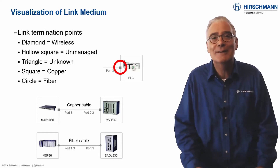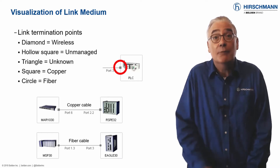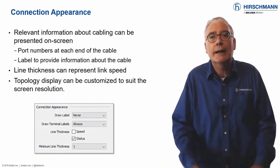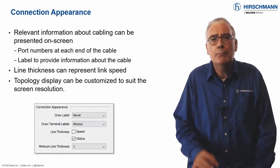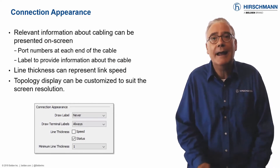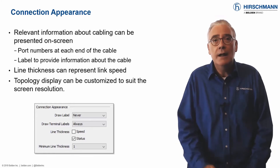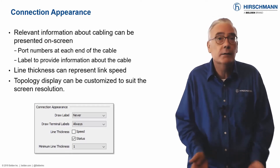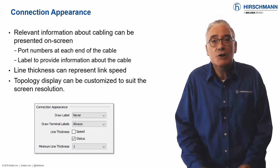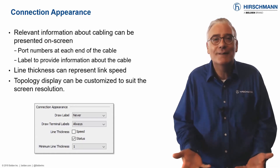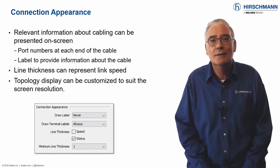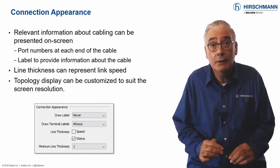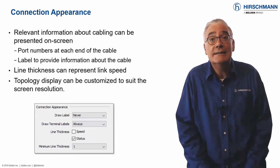Great for network documentation, and in the event of a cable failure, you already have a head start with the replacement. On any topology map, port information can tell you where a cable is connected on a device. Labels can indicate where cables are located, for example using patch panel information. While this information is valuable, it can also clutter up the screen display for some topologies. With Industrial HiVision, you can choose to display this information permanently, or just when the mouse pointer is over the connection.